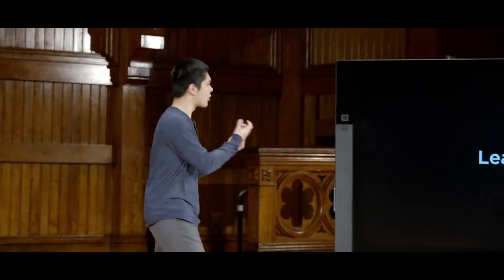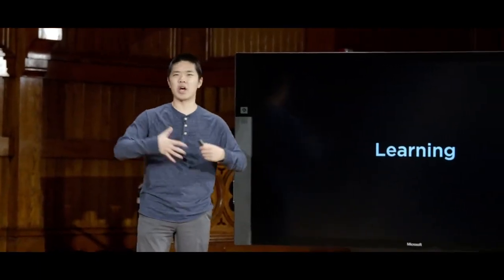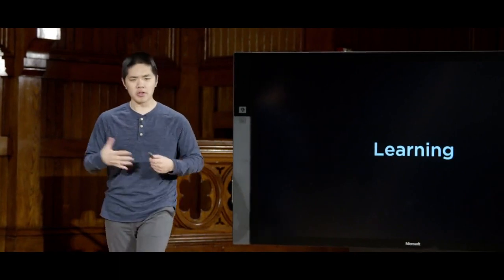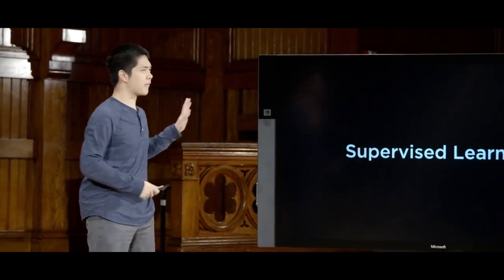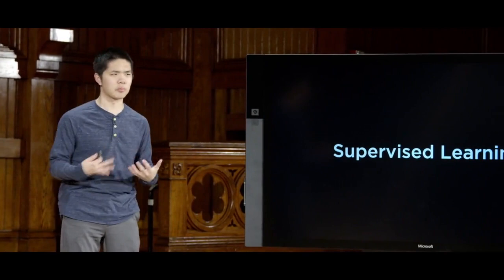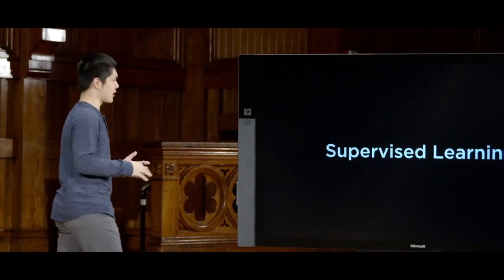Machine learning comes in a number of different forms, and it's a very wide field. Today, we'll explore some of the foundational algorithms and ideas behind many areas within machine learning. One of the most popular is the idea of supervised machine learning, or just supervised learning. Supervised learning is a particular type of task — it refers to the task where we give the computer access to a data set consisting of input-output pairs, and what we'd like the AI to do is figure out some function that maps inputs to outputs.